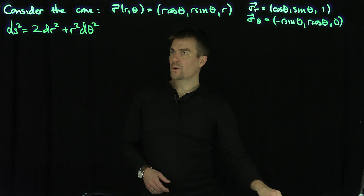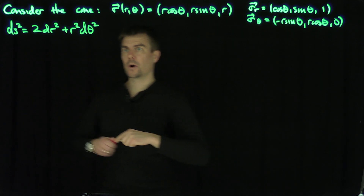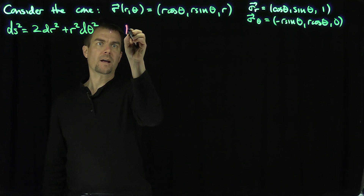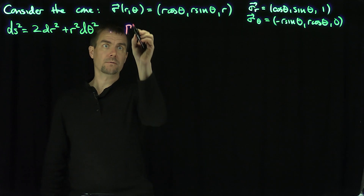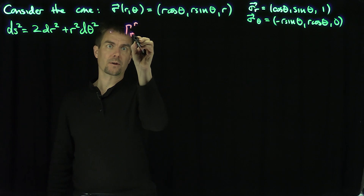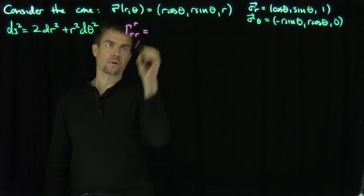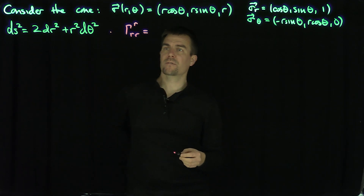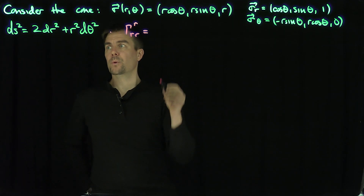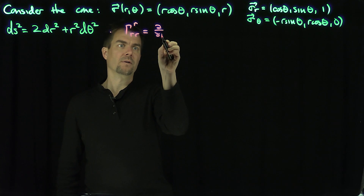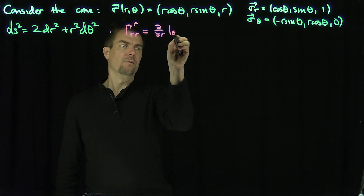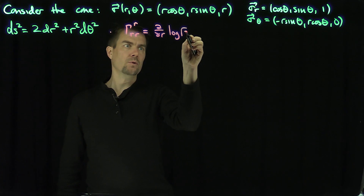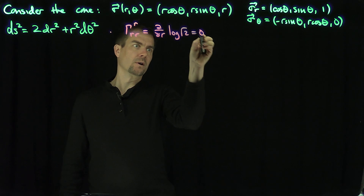Now I want to compute the Christoffel symbols. Since these are orthogonal curvilinear coordinates, I can use the orthogonal curvilinear coordinate formulas. Gamma^r_rr is the r-derivative of the log of the square root of the r-component, which is the r-derivative of log(√2), which is clearly zero.